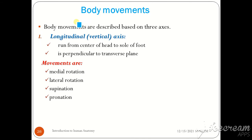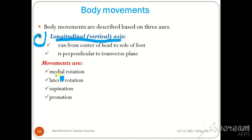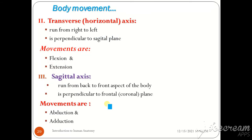Different types of body movements are described using two and three axes. The first is the longitudinal or vertical axis, which runs from the center of the head to the sole of the foot and is perpendicular to the transverse plane. Movements along this axis include medial rotation, lateral rotation, supination, and pronation. The transverse or horizontal axis runs from right to left and is perpendicular to the sagittal plane; movements here include flexion and extension.